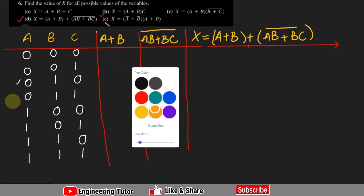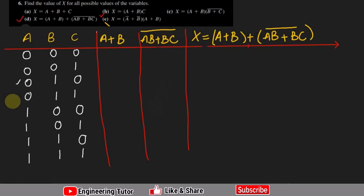So a plus b is 0 here. For ab: ab is 0 and bc is 0, so 0 plus 0, and the complement of it is 1. Similarly here a plus b is 0, ab is 0, bc is also 0 because 0 times 1 is 0, and bc is 0 times 1 equals 0 times 0 is 0. So 0 plus 0 is 0 and complement is 1.